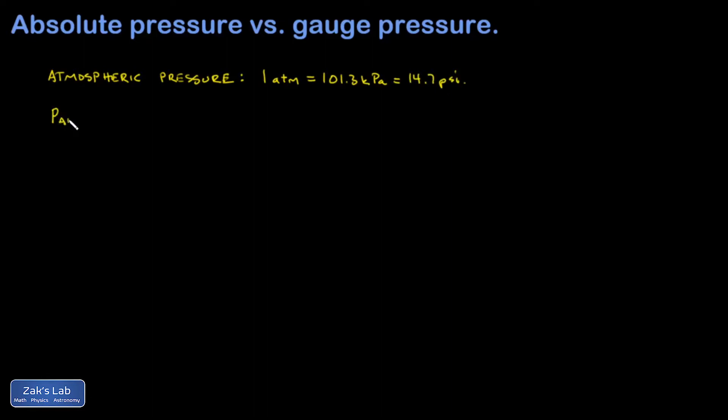So what's absolute pressure? That's when we measure a pressure and we include the atmospheric pressure number in that. So by telling you atmospheric pressure is 101.3 kilopascals, I'm implicitly measuring absolute pressure.